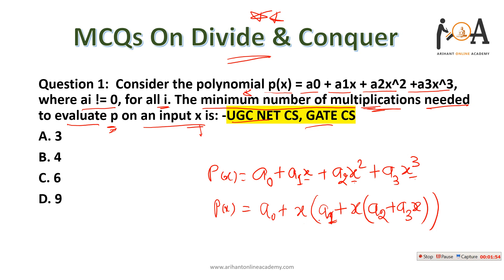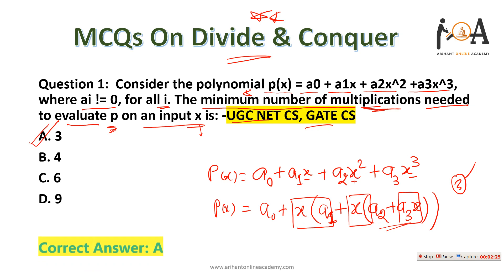If we multiply A1x, and then evaluate A2x² and A3x³, the minimum number of multiplications is one multiplication, then another, then another — so only three multiplications are needed to evaluate the value of P. Option A is the right answer. This was asked in very important exams like UGC Net and GATE. The approach is based on the divide and conquer technique.